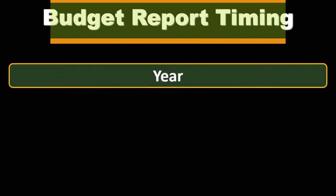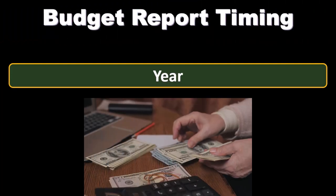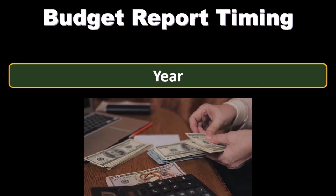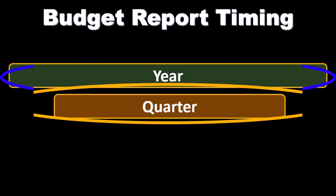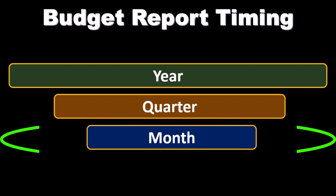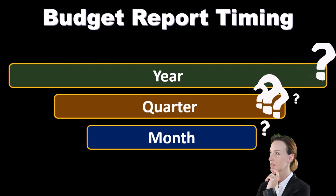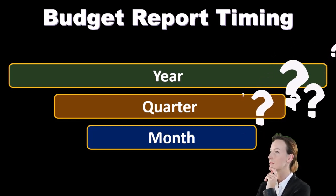Budget report timing: as we saw in prior presentations, when looking at the static master budget, we're considering budgeting for a year's time period, and then we break that down into quarters, and often into months. That would be the standard budgeting process — budget out a year, break it into quarters so we can review each quarter, and possibly break that out into months for a monthly review comparing budgeted numbers to actual numbers.